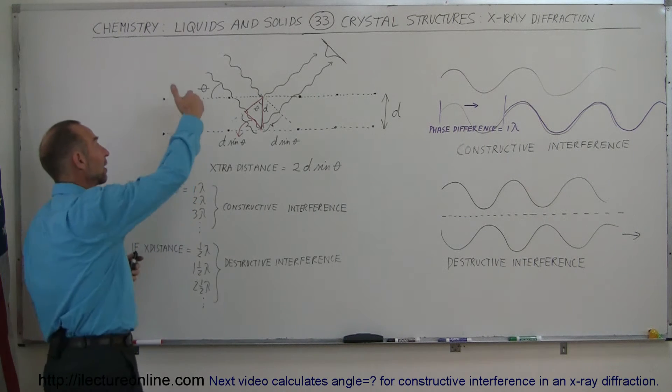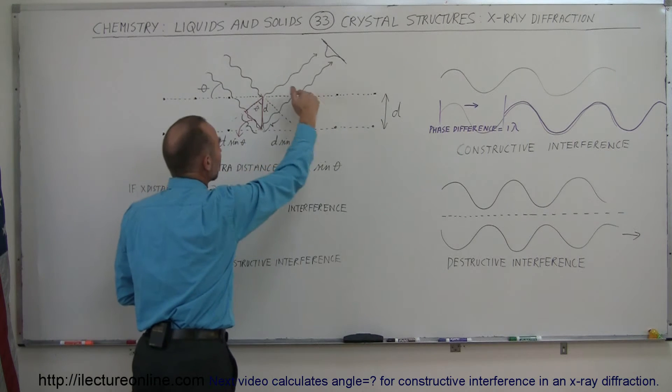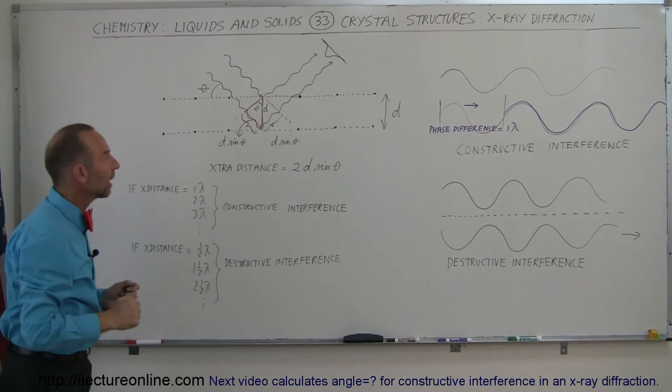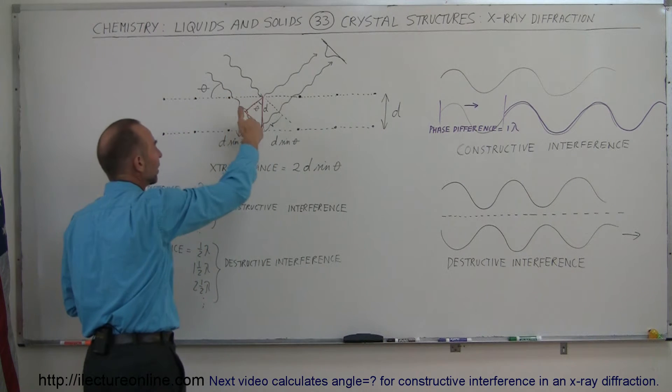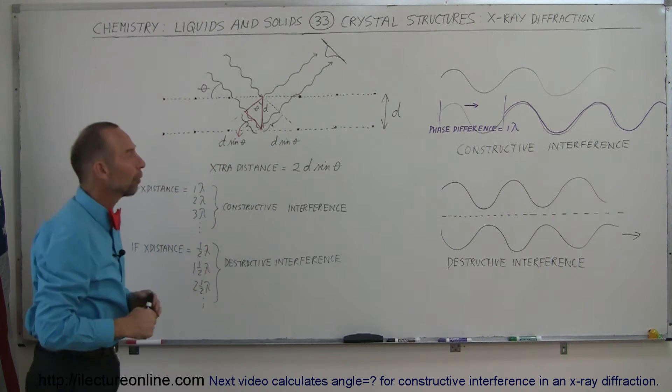The way that works is we send a beam of X-rays down upon a crystal structure. The first layer of atoms in the structure will scatter out and reflect X-rays, and then some of the X-rays will go through the second layer and the second layer atoms will reflect the X-rays and scatter the X-rays and so forth.